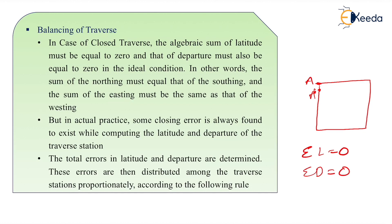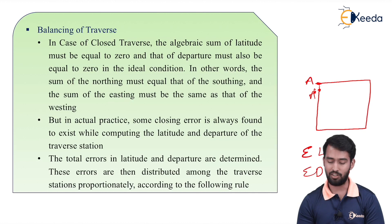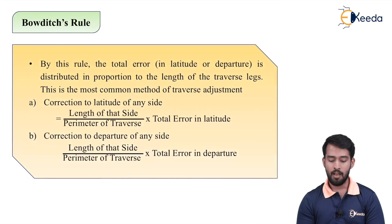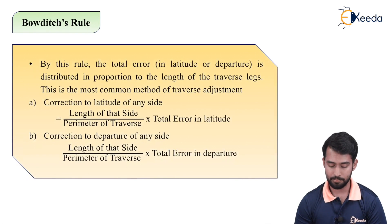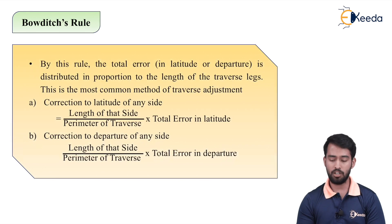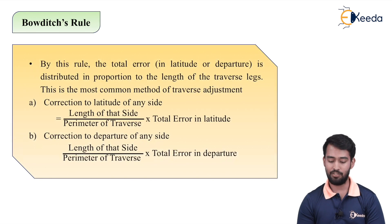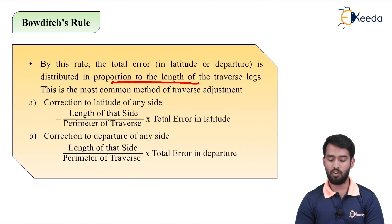The total error in latitude and departure is determined, then these errors are distributed among the traverse stations properly and in proportion according to the following rules. There are two rules to adjust this error proportionally and accurately in each side. First is Bowditch rule: the Bowditch rule states that the total error in latitude and departure is distributed in proportion to the length of the traverse legs. This is the most common method of traverse adjustment.